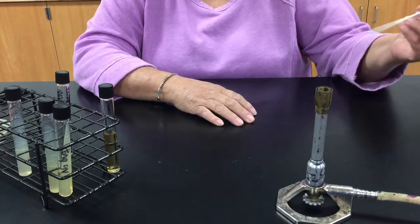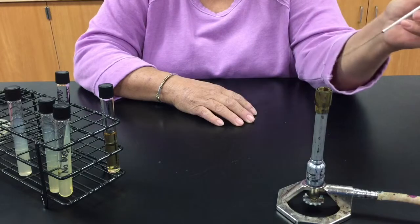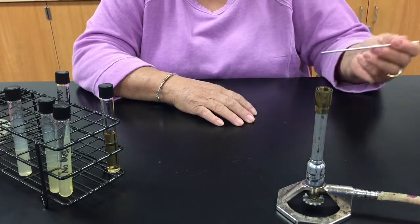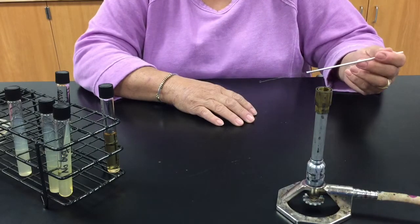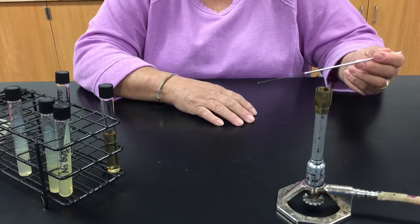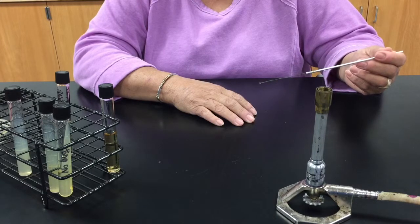I would begin by flaming my loop until it glows orange, and then I would aseptically remove a small quantity of the organism from the slant that's been provided for today's exercises.